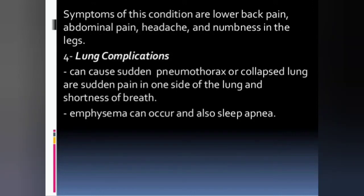Due to dural ectasia, patients experience lower back pain, abdominal pain, headache, and numbness. Lung complications include sudden pneumothorax — air in the thorax — leading to a collapsed lung with sudden pain on one side and shortness of breath. Empyema and sleep apnea can also occur.